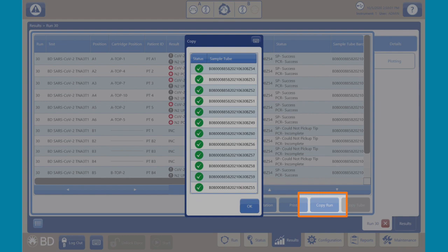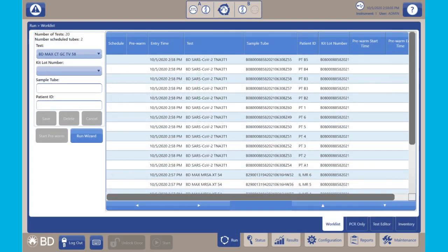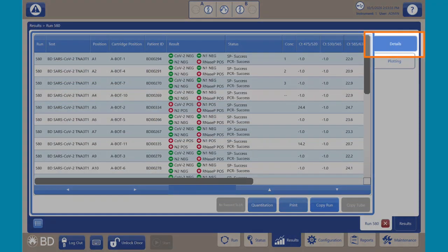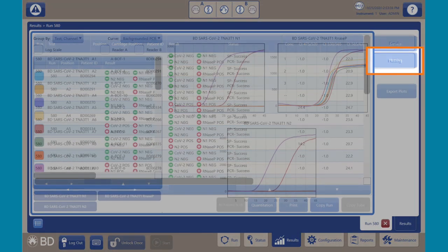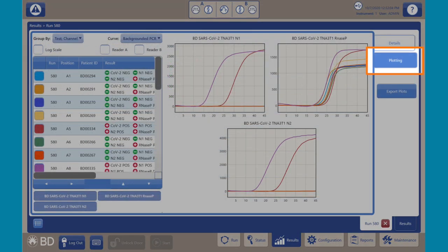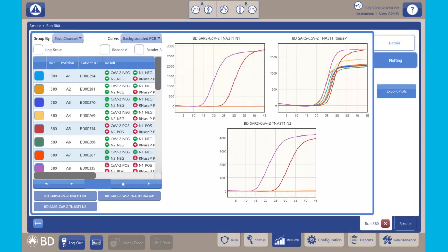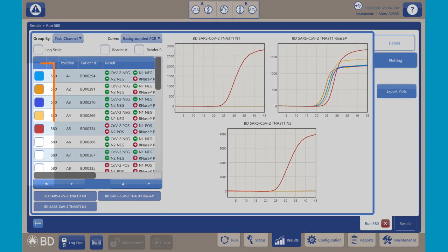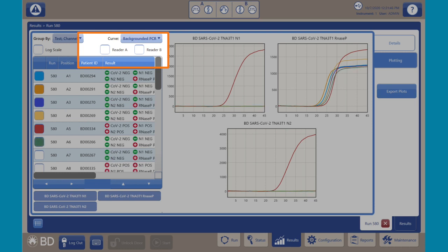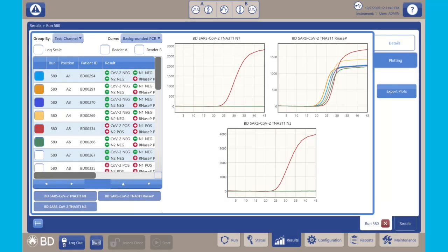Copy Run will copy the samples logged in for that run back into the work list. The Details tab appears by default when a run is displayed. The plotting display allows you to view PCR curves for past runs. By default, only the channels used in the test are shown, and all positions are shown. Use the position color checkboxes and the reader A or B checkboxes to view and hide specific positions. The color of the position checkbox when filled corresponds to the curve's color in the graph.